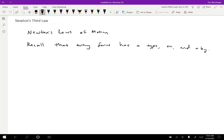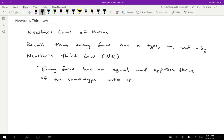So what Newton's third law tells us is the following. And I'm going to abbreviate this N3L so I don't have to write out Newton's third law over and over. So Newton's third law says the following: Every force has an equal and opposite force of the same type with opposite on and by.